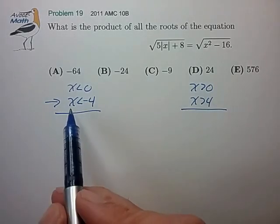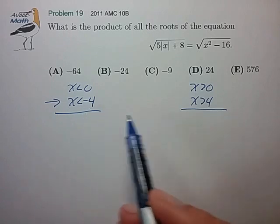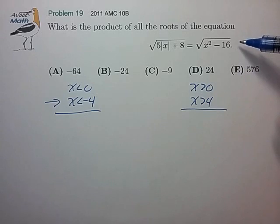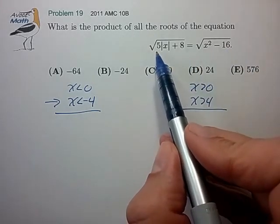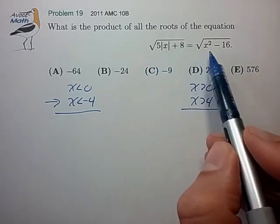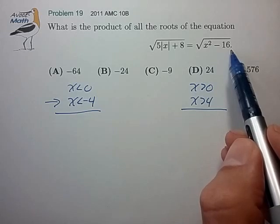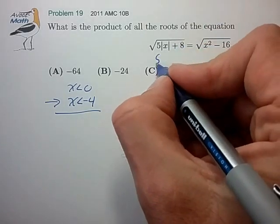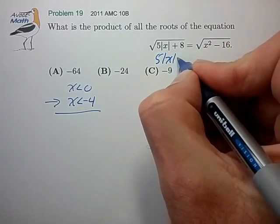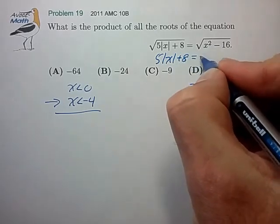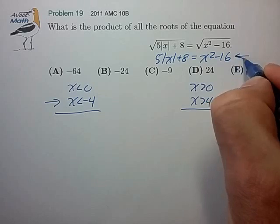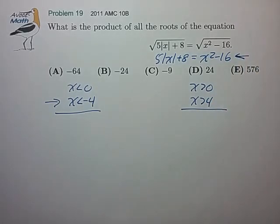Now once we've decided that we're solving x less than minus 4 and x greater than plus 4, we've actually simplified this equation a bit in that we've guaranteed that the expressions underneath the square root sign are always positive. And what that means is we can take the square of both sides of this equation to reduce it to an equivalent equation, just 5 absolute x plus 8 equals x squared minus 16. So we'll actually solve this equation going forward, and that simplifies things a bit.